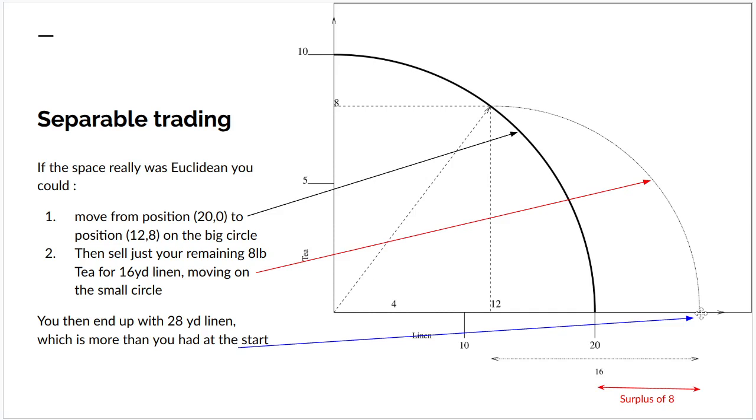So you would get a surplus. If it was the fact that commodity space followed a Euclidean metric, then you could get surplus value generated just by exchange.